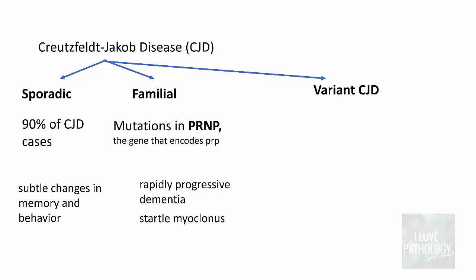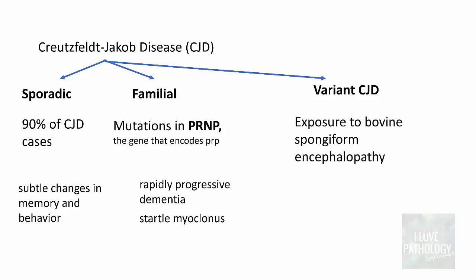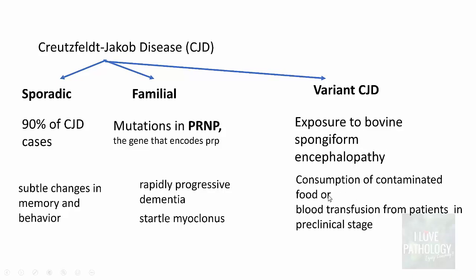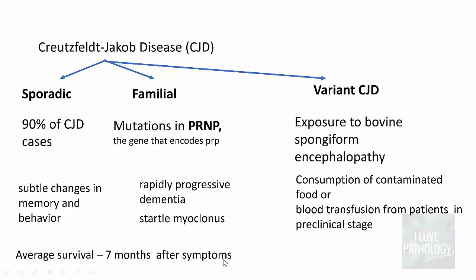The variant form of CJD is caused by exposure to the bovine form of spongiform encephalopathy. It is transmitted by consumption of contaminated food or by blood transfusion from patients who are in the pre-clinical stage of CJD. Importantly, there is no treatment for Creutzfeldt-Jakob disease or any prion disease, and the average survival is around seven months after the onset of symptoms.